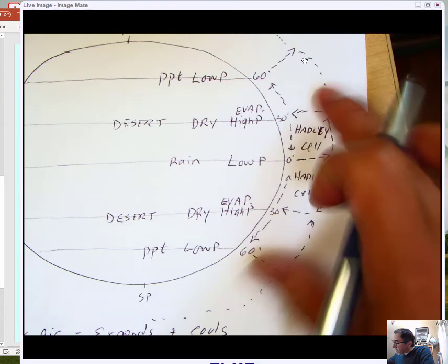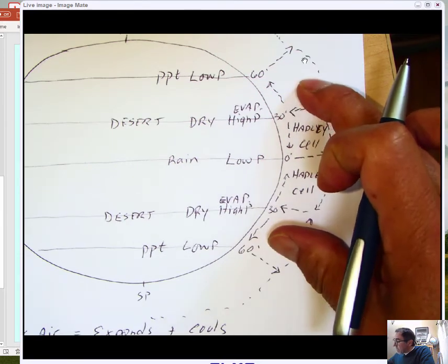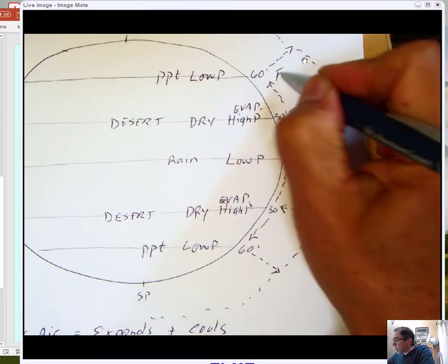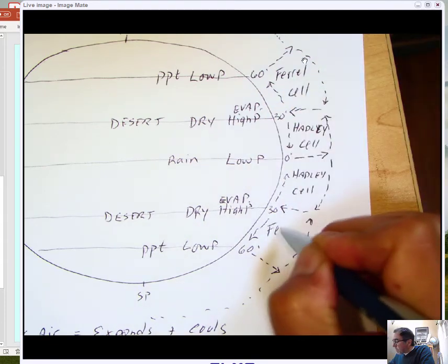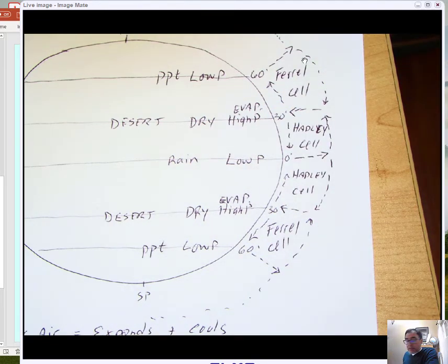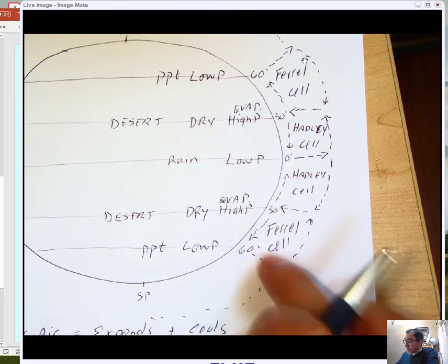Then once we get, so the names of these cells are called the Ferrel cells. Ferrel cell here, here's another one, Ferrel cell. So there's another set of atmospheric cells in this case between 30 and 60 degrees latitude.